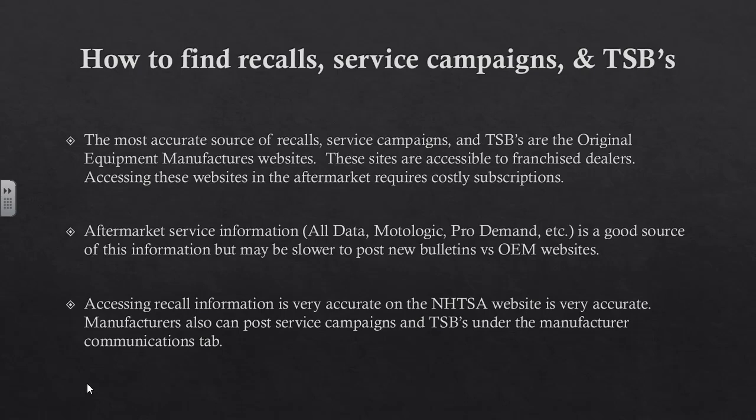How do we find recalls, service campaigns, and technical service bulletins? By far the most accurate source is OEM websites, accessible to franchised dealers — aftermarket access requires costly subscriptions. Aftermarket service information like AllData, Mitchell Logic, and ProDemand is a good source but may be delayed in posting bulletins compared to OEM sites. The NHTSA website is very accurate for recall information, but posting of service campaigns and TSBs is voluntary by manufacturers — so it's accurate for safety recalls but not necessarily for other items.